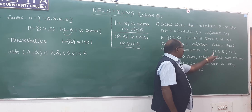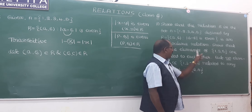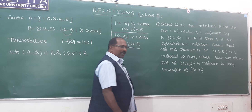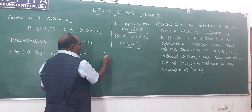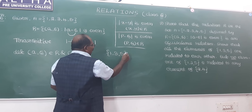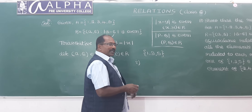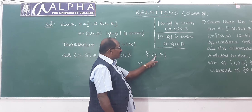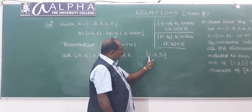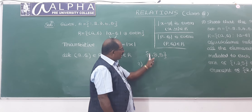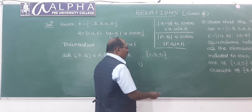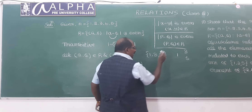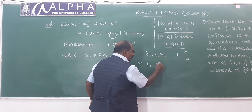Now, what does the sub-question mean? We have to show that all the elements of {1, 3, 5} are related to each other. We need to prove that 1 is related to 3, 1 is related to 5, 3 is related to 1, 3 is related to 5, 5 is related to 1, and 5 is related to 3. For example, 1 is related to 3 because |1 - 3| is even.